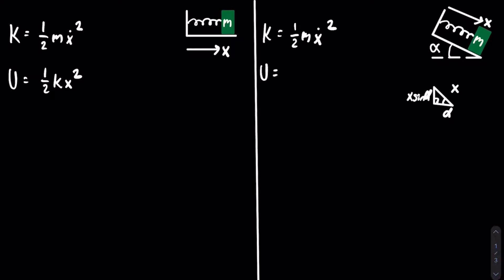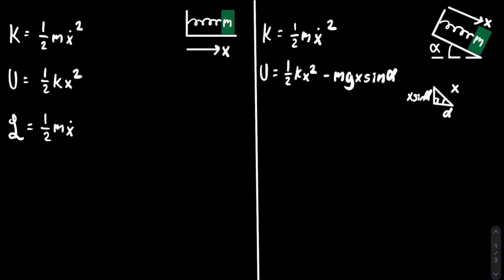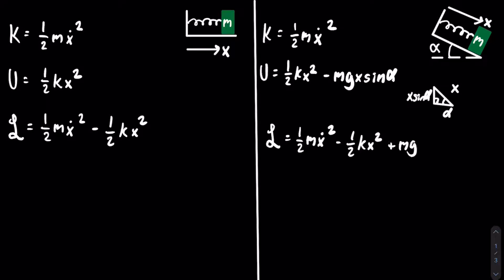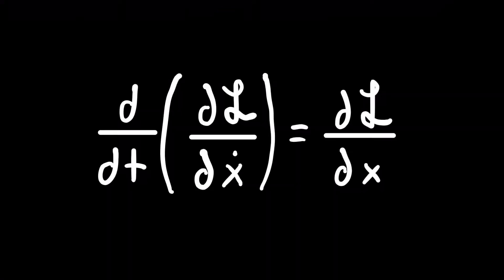This means that the potential energy is going to be equal to one-half k x squared minus m g x sine of alpha. I can now construct the Lagrangian, which is the difference between the kinetic and potential energies. This is the equation we will use to find the equations of motion for the mass-spring systems.